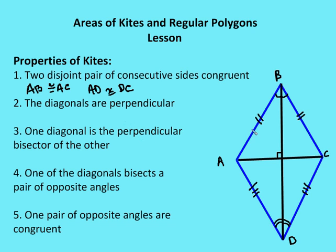The diagonals are going to be perpendicular, as shown, so AC is perpendicular to BD. One diagonal is a perpendicular bisector of the other — we'll call the intersection point O. One of the diagonals bisects a pair of opposite angles, so angle ABO is congruent to angle CBO.